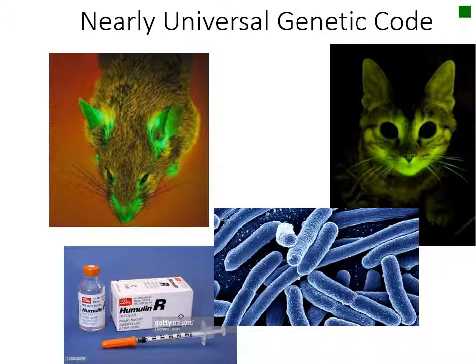Another good example of the universal nature of the genetic code is the insulin used by diabetics to control their disease. This insulin is actually produced by E. coli. The DNA sequence of the human gene for insulin can be inserted into E. coli's chromosome, and E. coli can produce human insulin because of the universal genetic code.